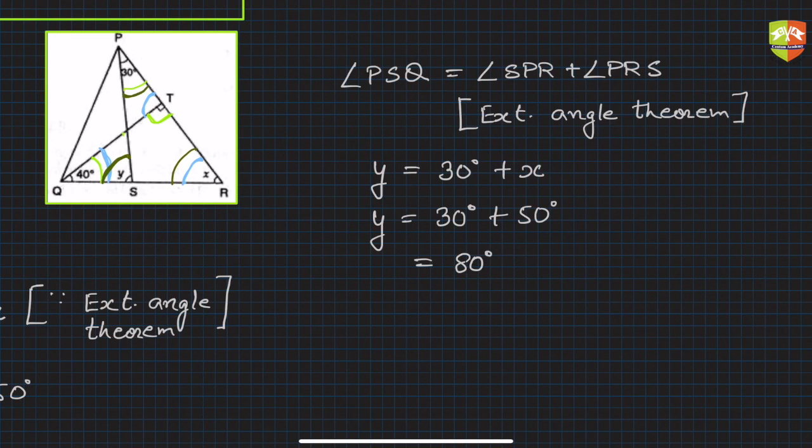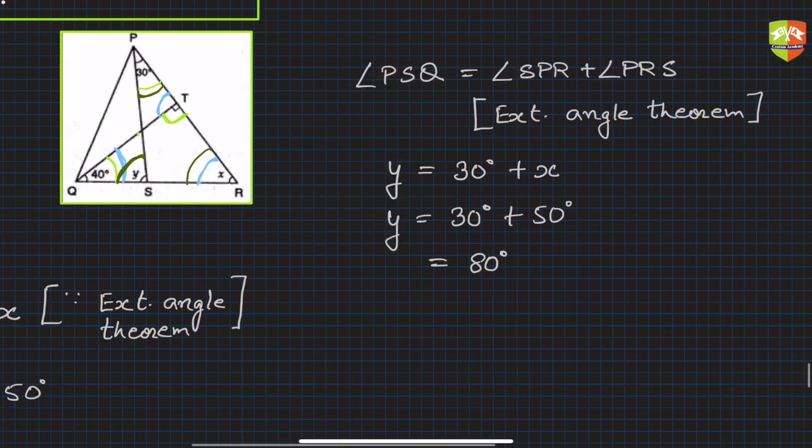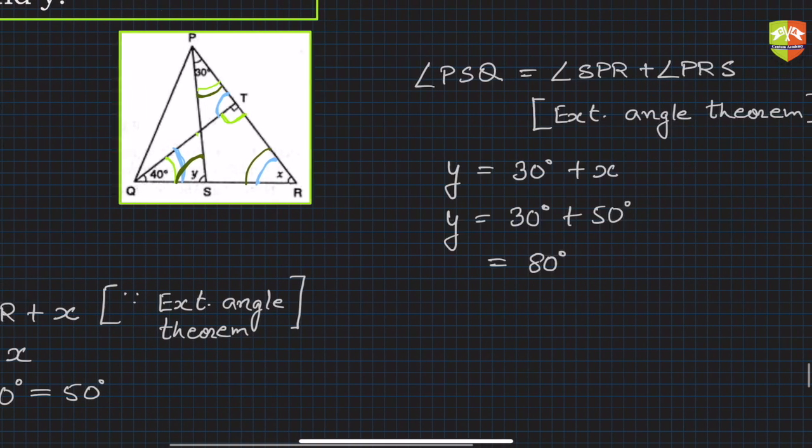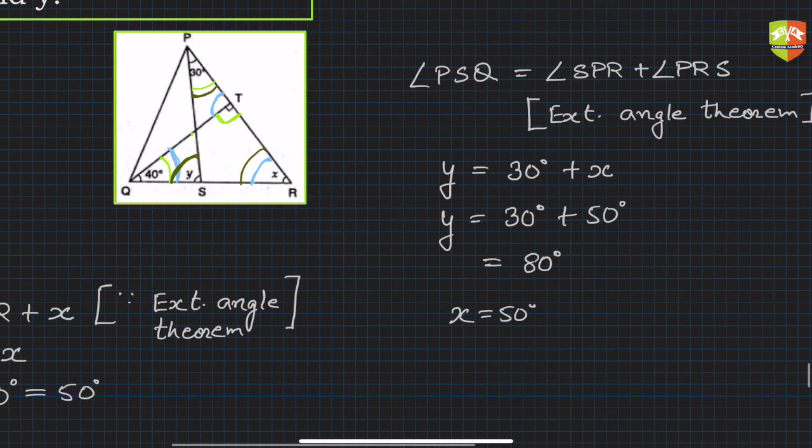So that's how we found out both x and y. So to summarize, x is equal to 50 degrees and y is 80 degrees. So we did not require the angle sum property in this case.